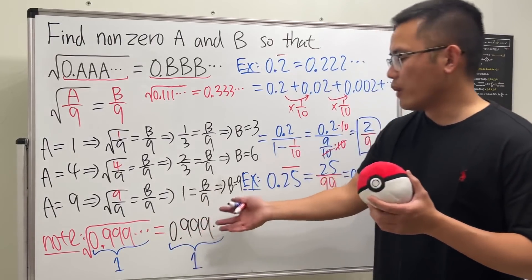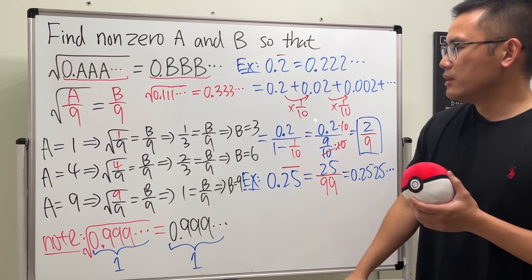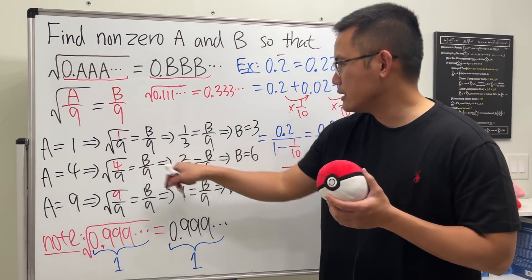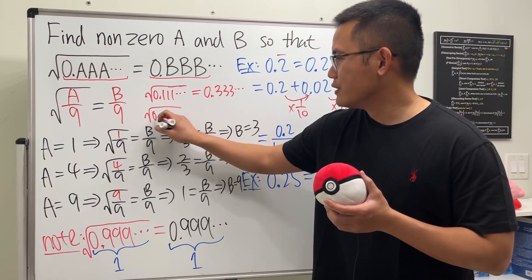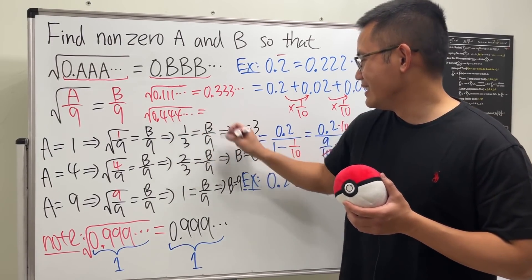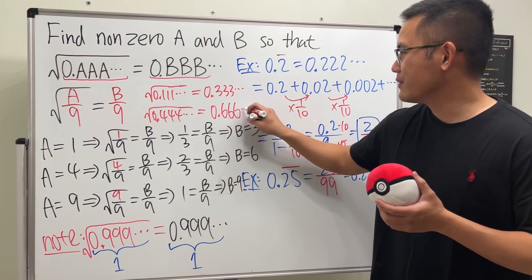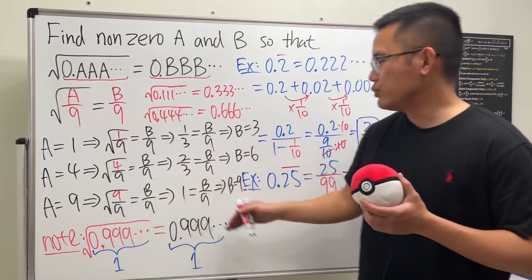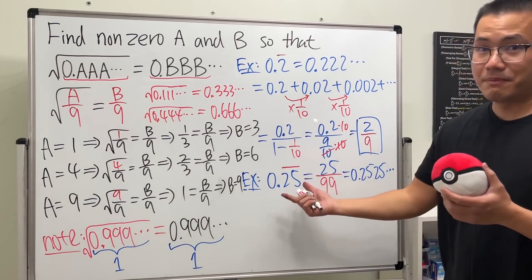So you can see, I'm putting down another combination: the square root of 0.444... forever equals 0.666... forever. We have three combinations total. Pretty cool, huh?